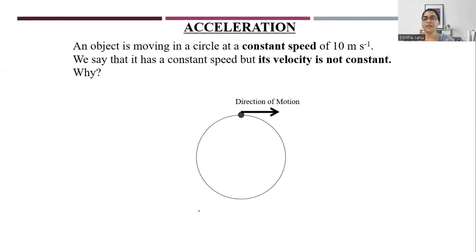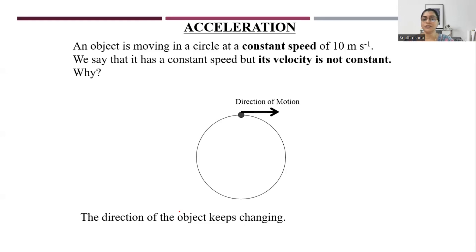For an object moving at constant speed, changing its direction is also called accelerated motion. Hence circular motion is an accelerated motion.